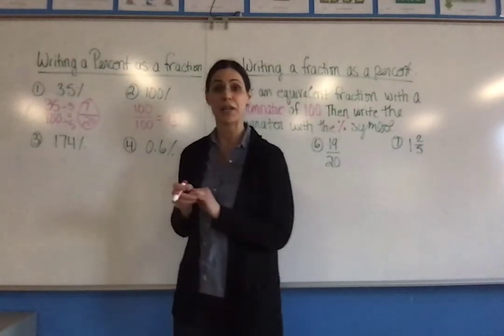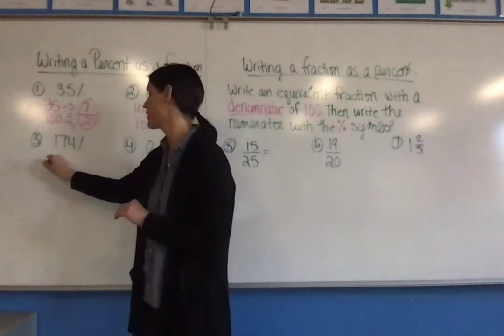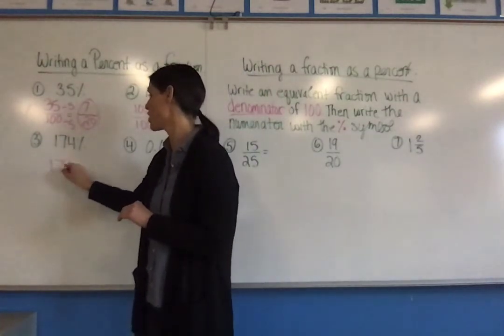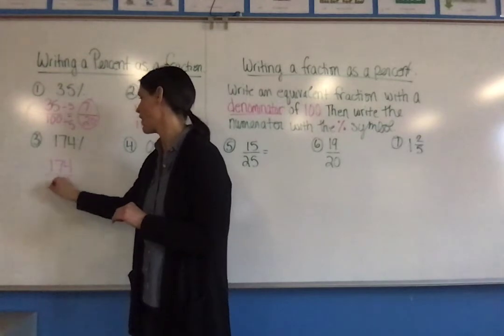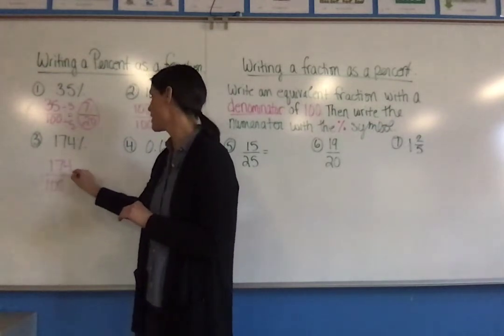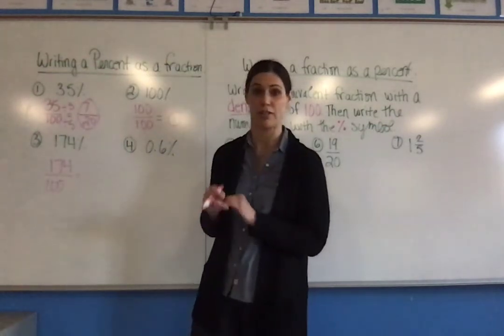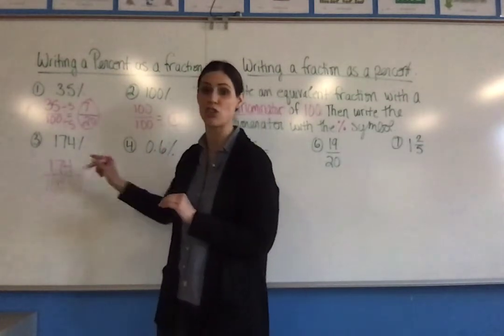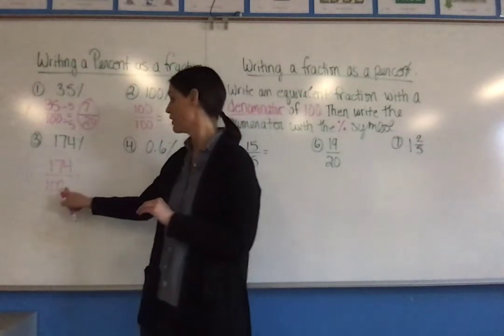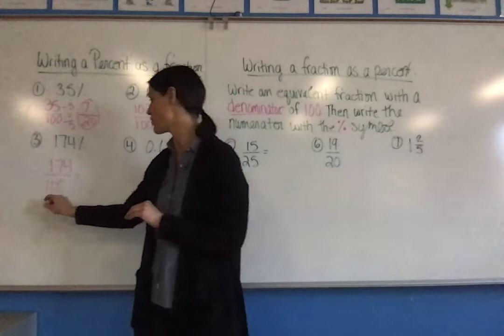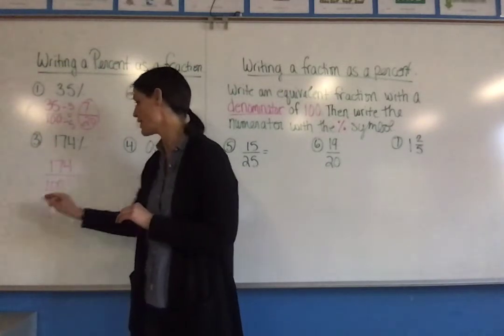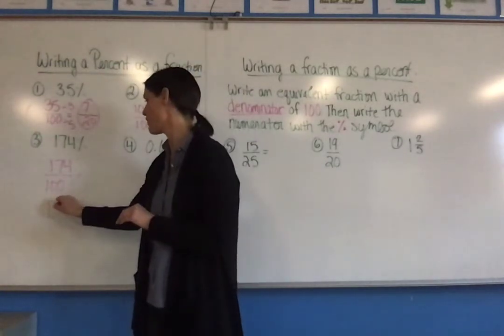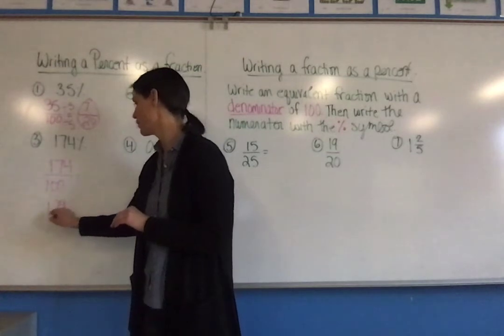Number three, I have a percent greater than 100. Again, I'm going to first take the number 174 and write it out of 100. This is an improper fraction, so if it's improper, I have to change it to a mixed number. 100 goes into 174 one time. There's 74 left over, over 100.